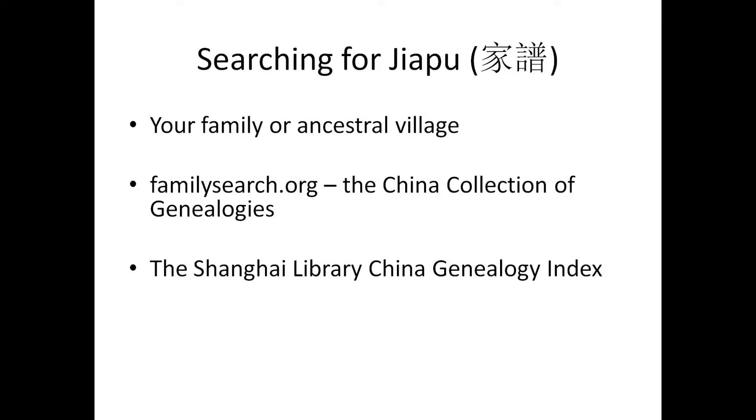The Shanghai Library has about 50,000 physical copies of genealogies and they've put together a big catalog — that's a useful place to look. Here's an example of a genealogy I got from a family member — just a Xerox copy is all that exists, and portions of it are missing. But this genealogy actually has more accurate information than I found in the village genealogy pertaining to my family.